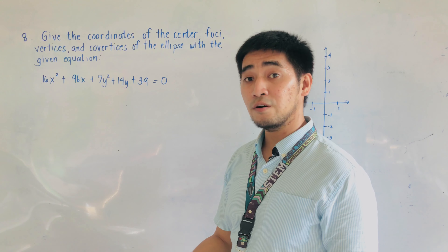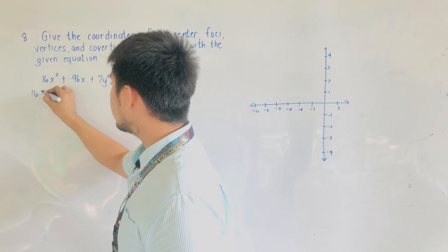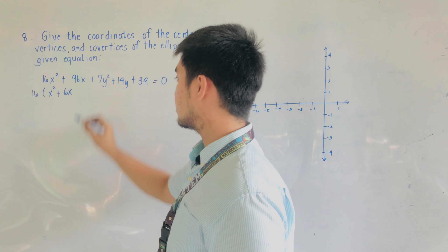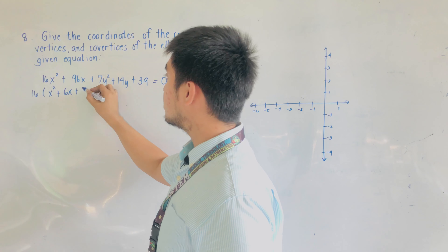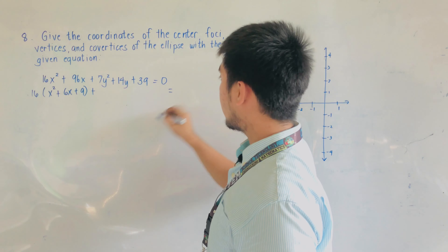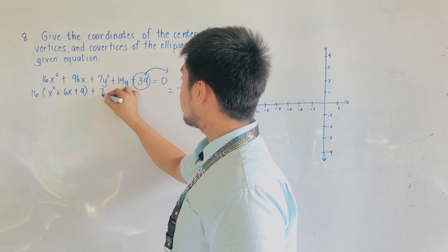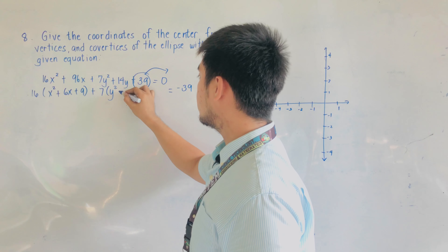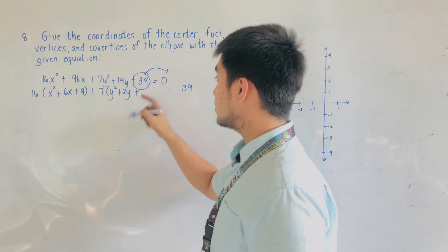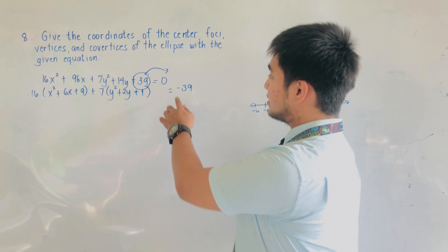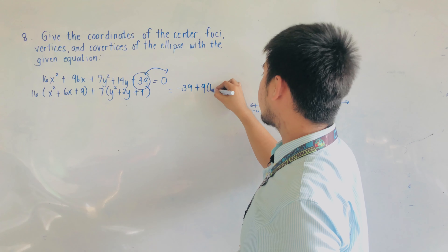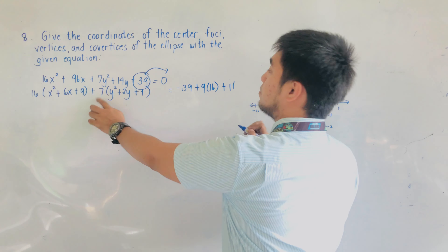We'll factor the coefficients of x squared and y squared. So we'll have 16 times the quantity x squared plus 6x (since 96 divided by 16 is 6), plus 9 (since 6 divided by 2 is 3, and 3 squared is 9). The positive 39 moves to the right side as negative 39. Then factor out 7: 7 times y squared plus 2y (since 14 divided by 7 is 2), plus 1 (since 2 divided by 2 is 1, and 1 squared is 1). The right side becomes negative 39 plus 9 times 16, plus 1 times 7.